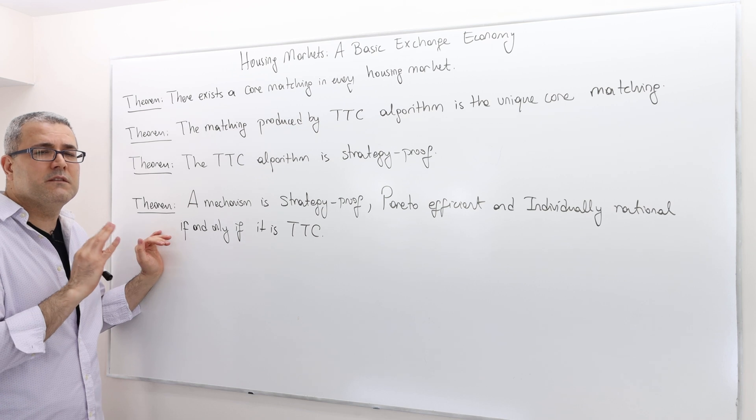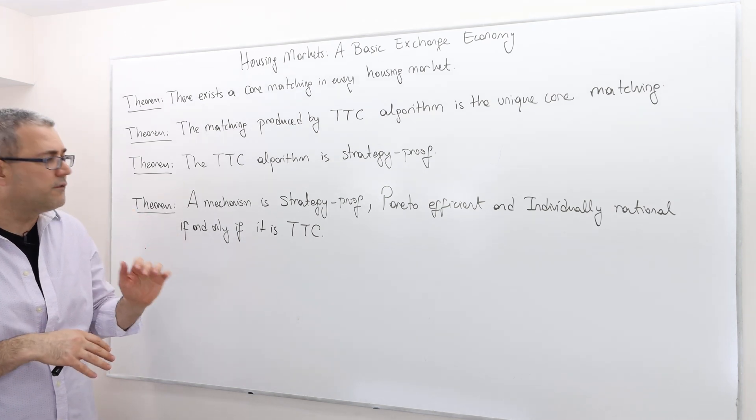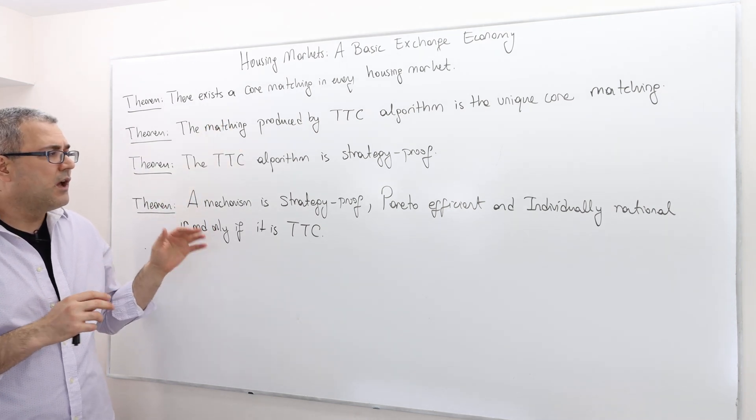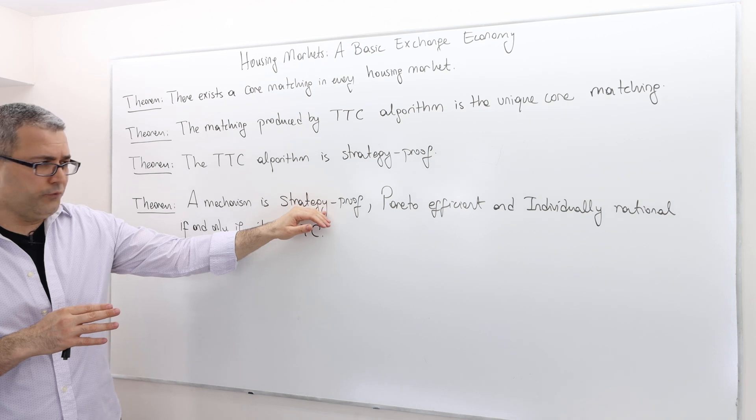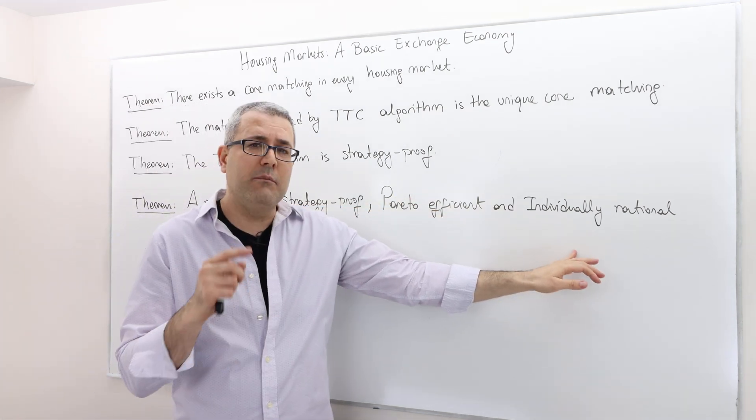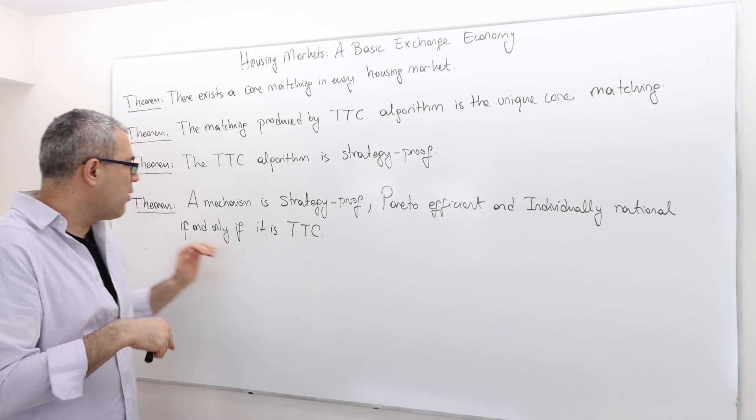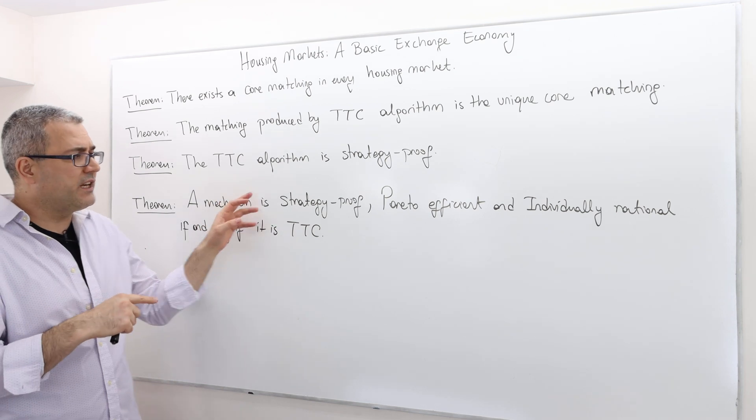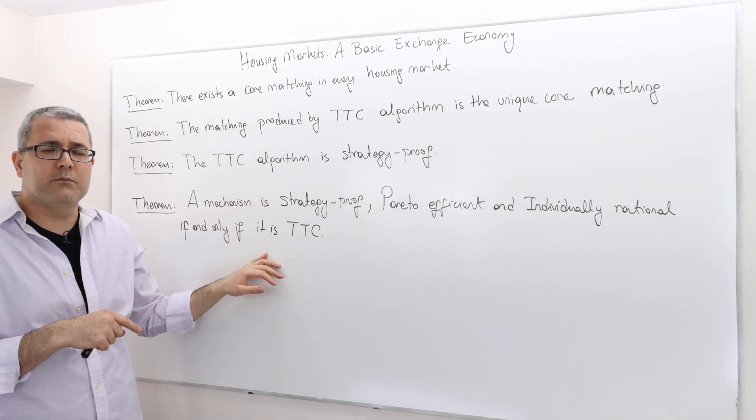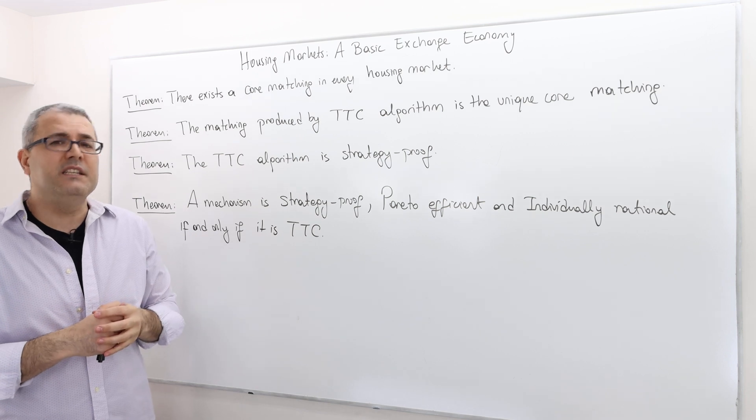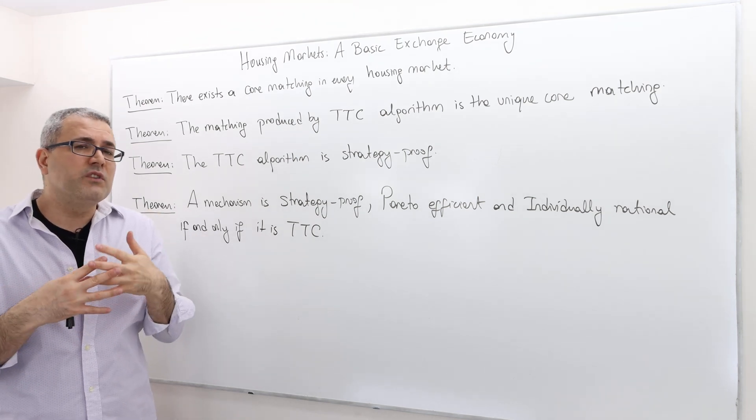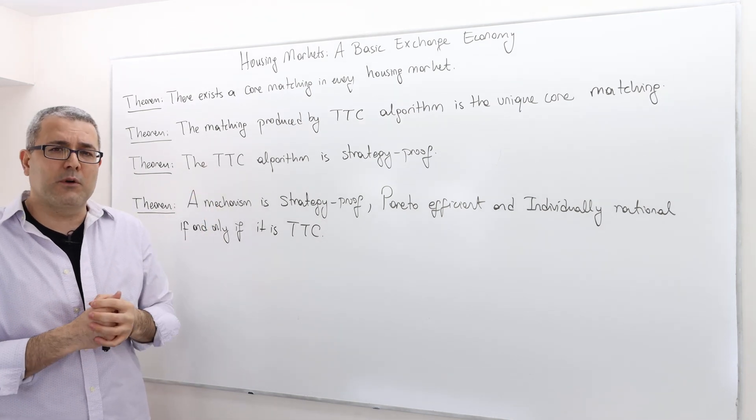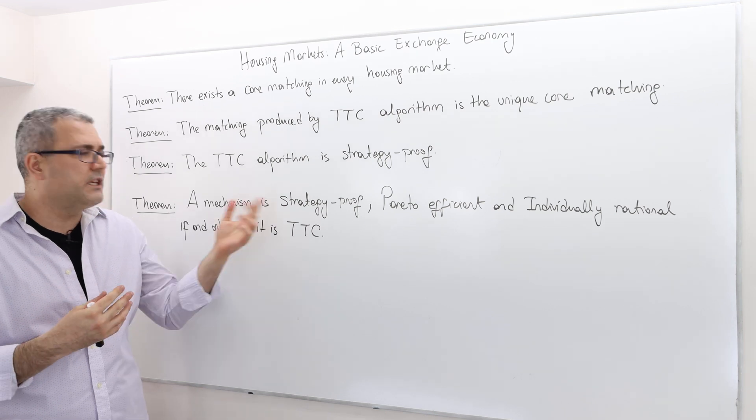So in that sense, this theorem is very powerful. And it says the following: think of any mechanism for housing market. If you want this mechanism to be strategy proof, Pareto efficient, and at the same time, individually rational, well, then you know what, there's only one such mechanism which will satisfy all those three properties in the housing market. It is the TTC, the top trading cycle. So you don't really need to look at any other mechanisms. Use the TTC if your problem is housing market problem. It will always give you strategy proof.